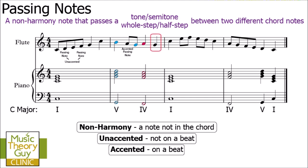What about the note G at the end of bar two? It is not a passing note. The reason is the leap or jump from that G to the C in the next bar — that means it is not passing a tone or semitone between two different chord notes.